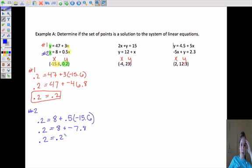So again, 0.2 equals 0.2. That means this point lies on both of those lines. That means this point is a solution to this system. Those two lines intersect at this point. So it is a solution.